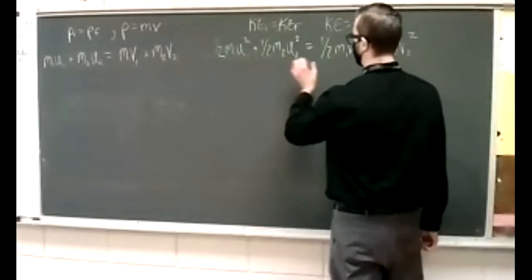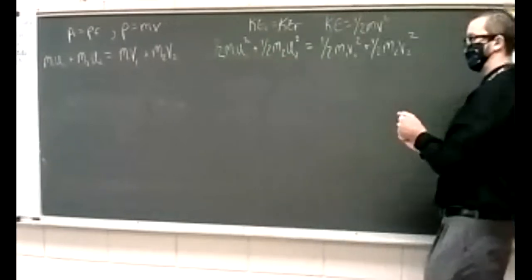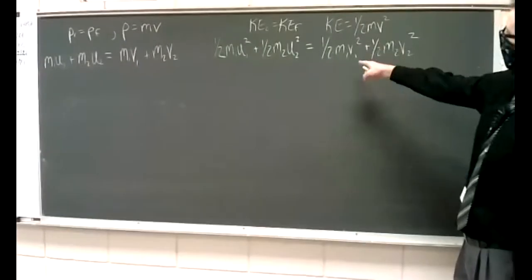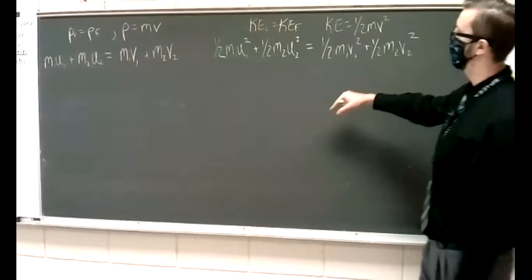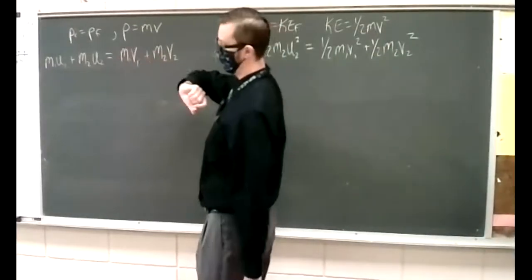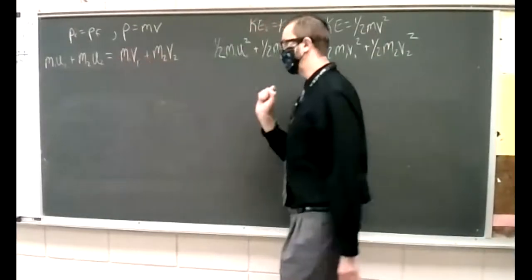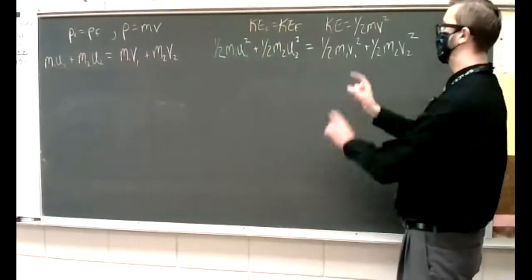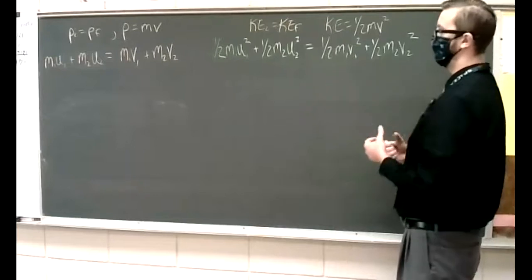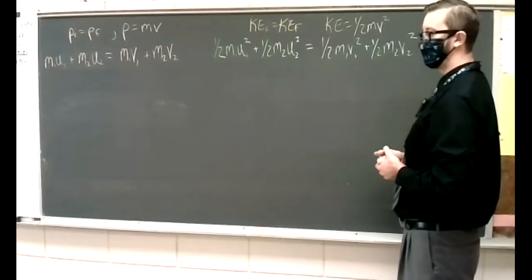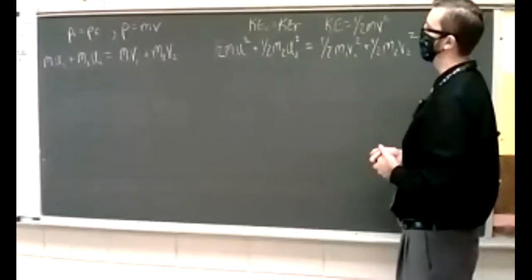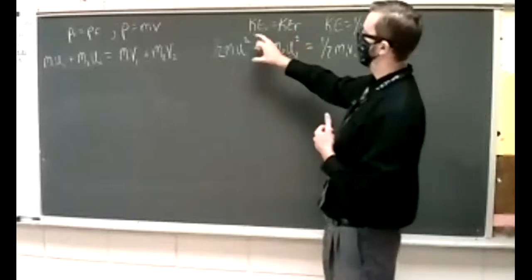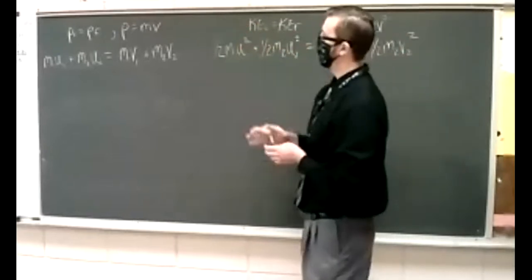Objects one and two collide and bounce off. The kinetic energy is conserved, and the momentum is conserved. Think about yesterday's essential question — how are these laws important in deducing the muzzle velocity? We used both energy conservation and momentum conservation.